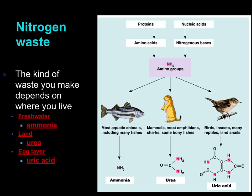Urea, on the other hand, is moderately toxic — about 400 times less toxic than ammonia. It can be stored temporarily and is fairly soluble, but it does require ATP to be formed. It's the excretory product of organisms that have some access to water, for example mammals, most amphibians, sharks, and some bony fish.